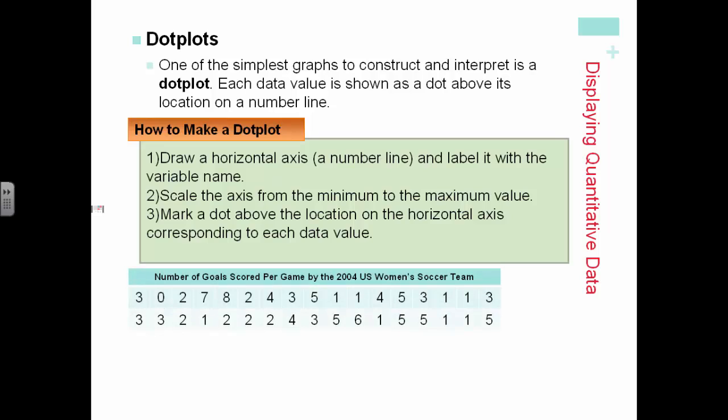Here's an example for the number of goals scored per game by the 2004 U.S. women's soccer team. And here's an example of a dot plot showing that information. Notice that the bottom is labeled with number of goals scored, and each of the dots represent one of the values.